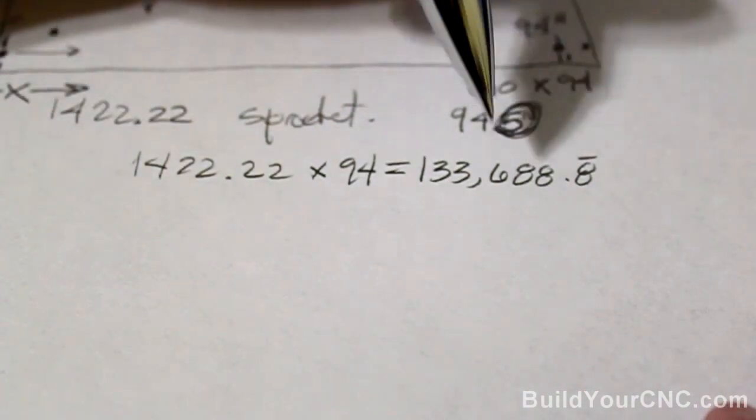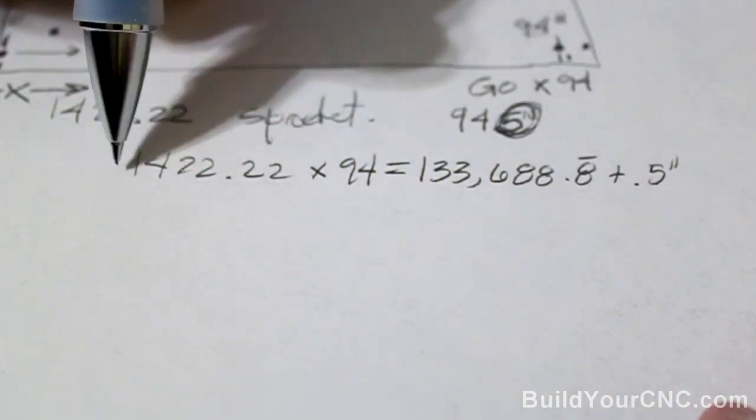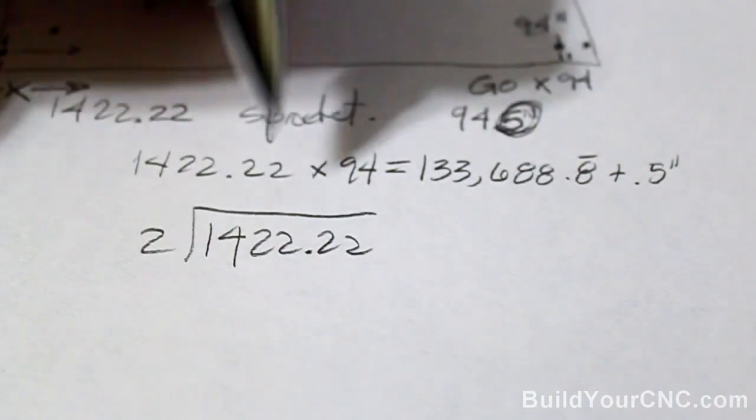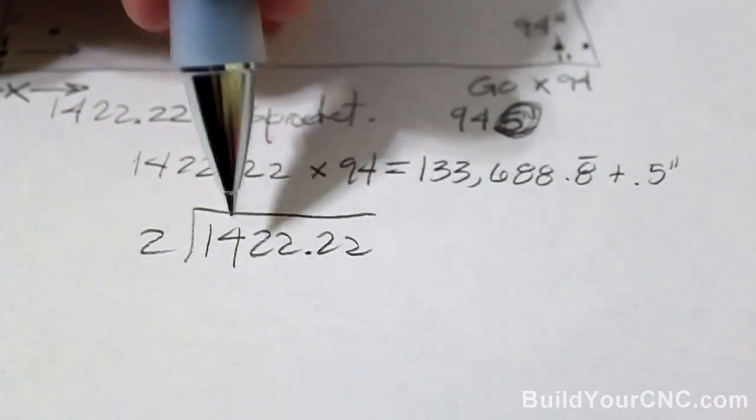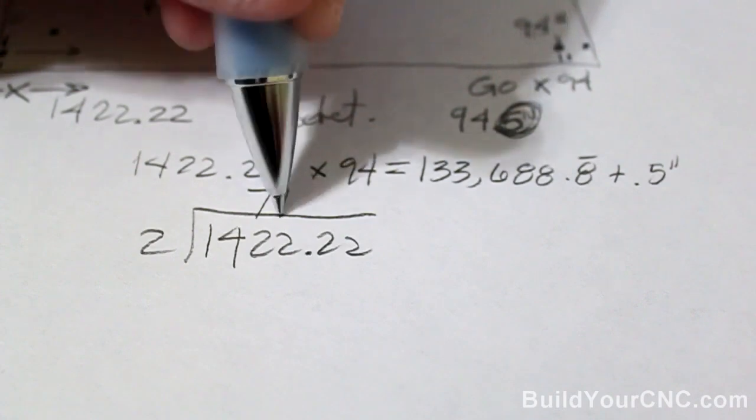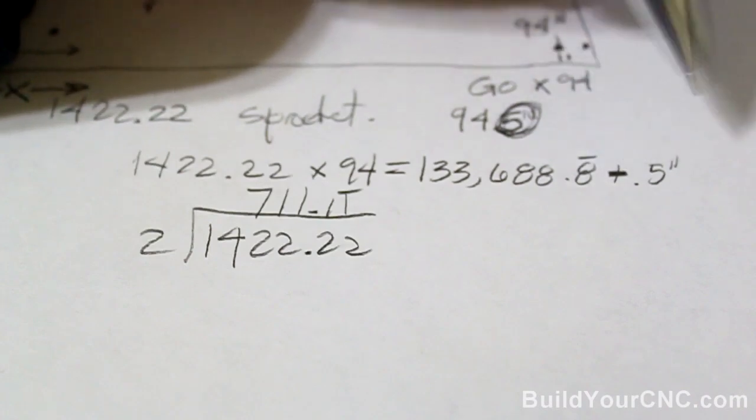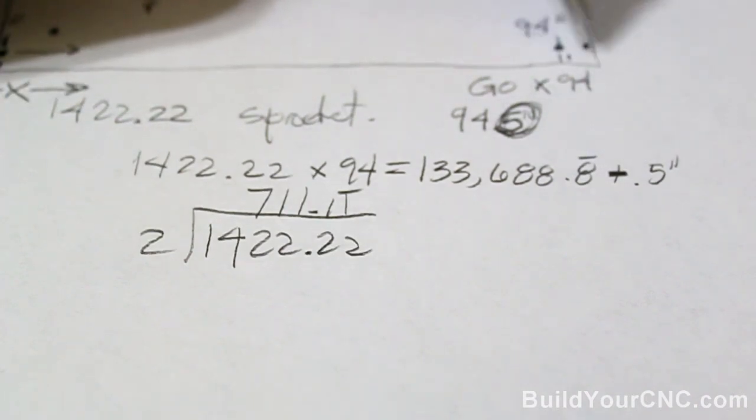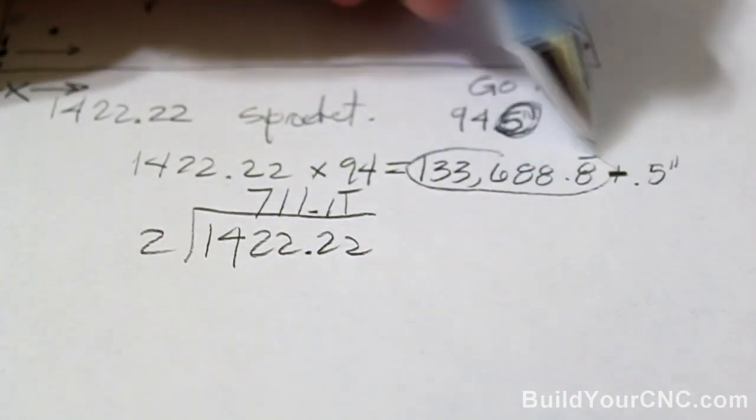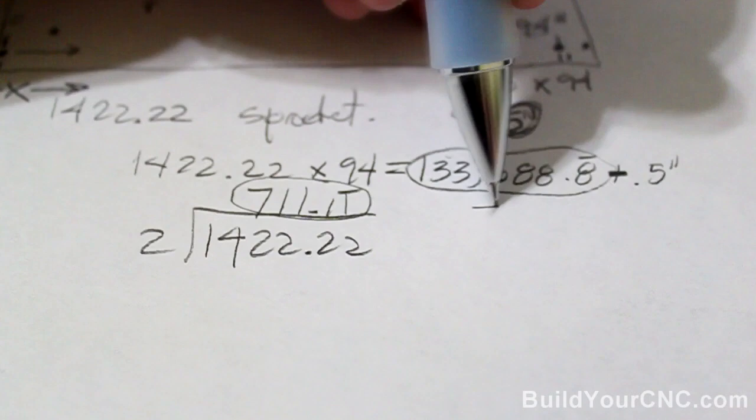Now we need to make an adjustment. We need to adjust this number plus 0.5 inches. And what is 0.5 inches? It's really half of this. So we're going to take 1422.22 and divide it by 2. So one half of this, which is half of an inch, because this is one inch worth of steps, is 711.11. One repeating. Actually, this really should be minus, because it went 94, but we measured 0.5, so we need to subtract half of an inch. So we still get the right number. We're just going to take this number here, and we're going to subtract 711.11 from this number. So, let's do that.